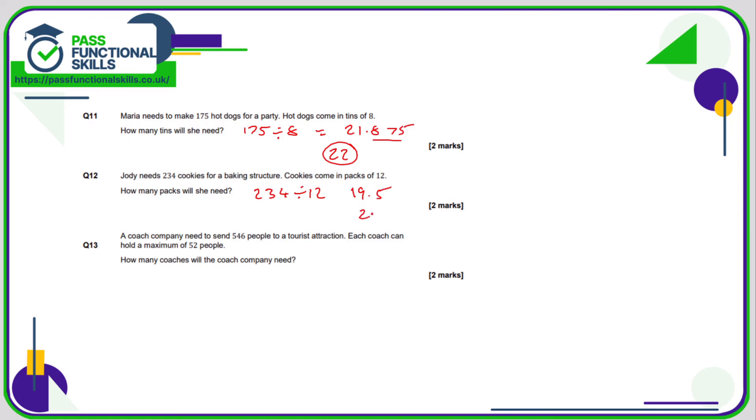Question 13 is 546 divided by 52, and that comes to 10.5, but you can't have half a coach, so that will be therefore 11 coaches. Don't be fooled with these numbers. You might think, okay, 10.5 is nearer 11 than 10. Even if this number was 10.003, you need 10 full coaches and a tiny bit of an 11th coach, so even if it's a minuscule amount, you would still need to round it up to 11.